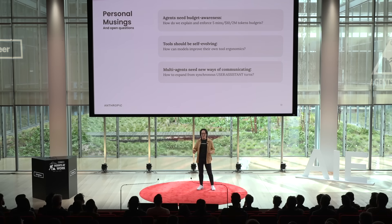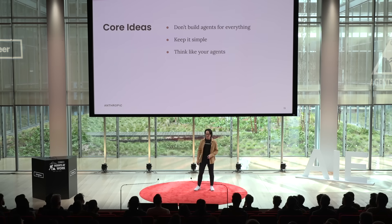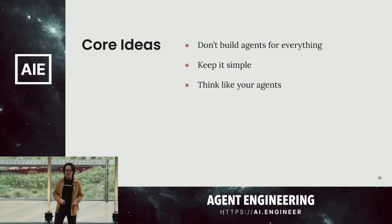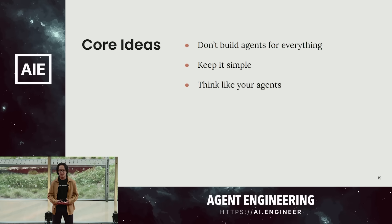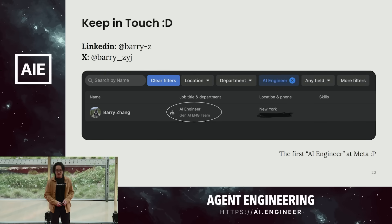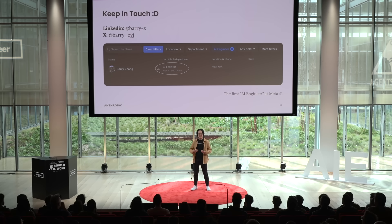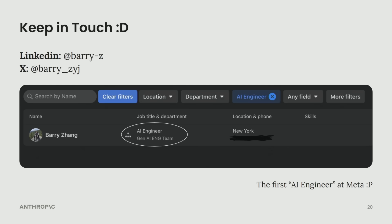These are the areas that take up a lot of my mind space. If you're also thinking about this, please reach out — I would love to chat. Let's bring it all together. If you forget everything I said today, these are the three takeaways: first, don't build agents for everything. If you do find a good use case and want to build an agent, keep it as simple for as long as possible. And finally, as you iterate, try to think like your agent, gain their perspective, and help them do their job. These are my socials if you want to get connected.